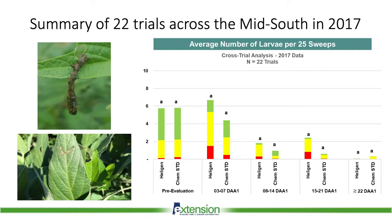I did want to show this one slide — a summary of 22 trials conducted in the Mid-South with university and private research people evaluating Helogen against the chemical standard used for podworm management across different areas. What you see is Helogen performed pretty well. There's a little bit of a lag in performance — it may not be quite as good as the chemical standard at any individual rating — but really over time it provides effective control. And when you refer back to the price of this product, it doesn't cost as much as these other chemical standards, so we need to give it a little more time and be patient with this virus.